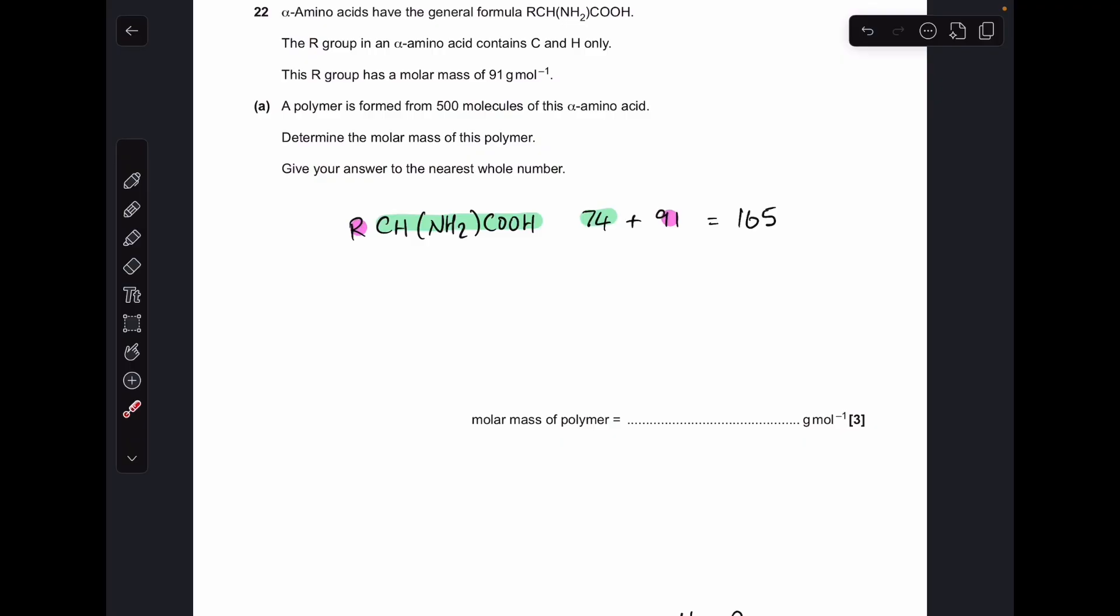So remember the R group is 91, the rest of the alpha amino acid is this bit I've highlighted in green, 74, so that's where that 165 comes from. Next thing we'll do is multiply that by 500, which gives us 82,500.